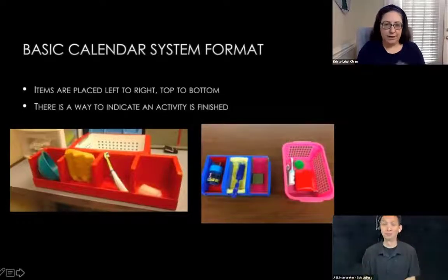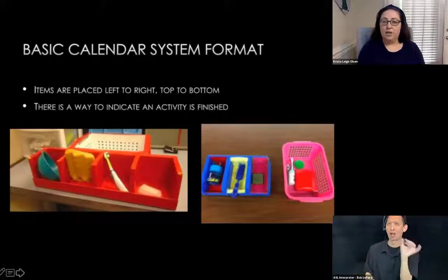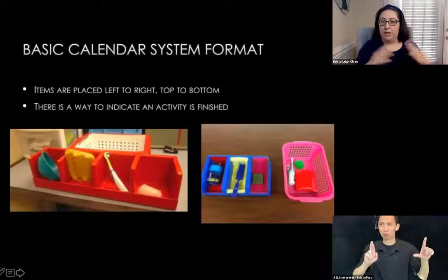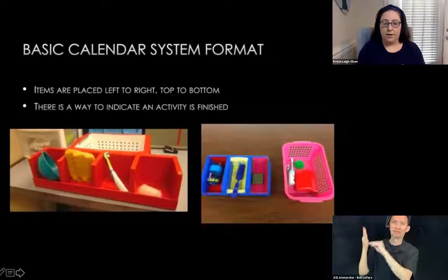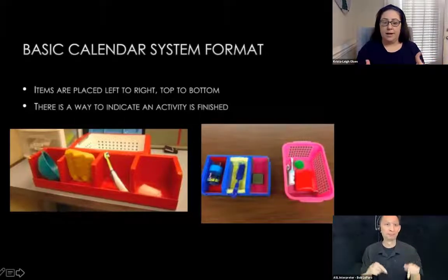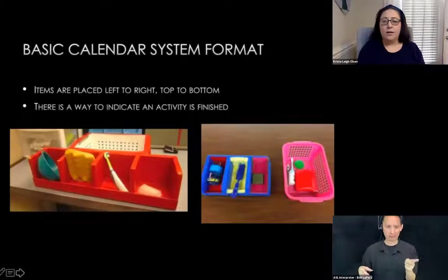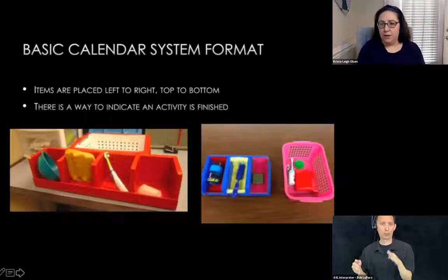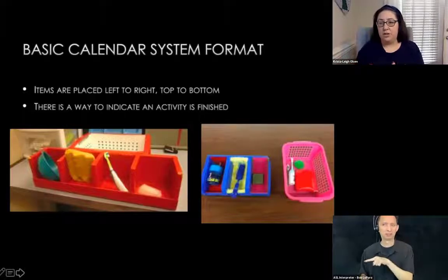Before I get into the really big details, I wanted to give you the basic calendar system format because you'll see them in a lot of pictures throughout these slides. Generally, calendar systems are set up to go left to right, and if you expand beyond there, they go top to bottom, much like a traditional wall calendar. You'll also see a finished box — one is lined with a lighter paper, and the other is a hot pink box. That finished indicator will be present in every picture.